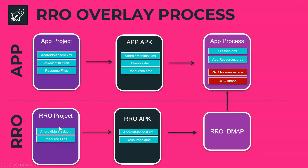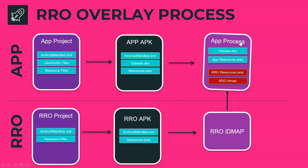Let's have a closer look at the RRO overlay process. This diagram shows a high-level overview of how an application is compiled, executed, and overlaid by an RRO. The top section shows how a normal Android application is converted into an Android APK and executed, and the bottom part shows how an RRO project gets converted into an RRO APK and gets overlaid into the app process.